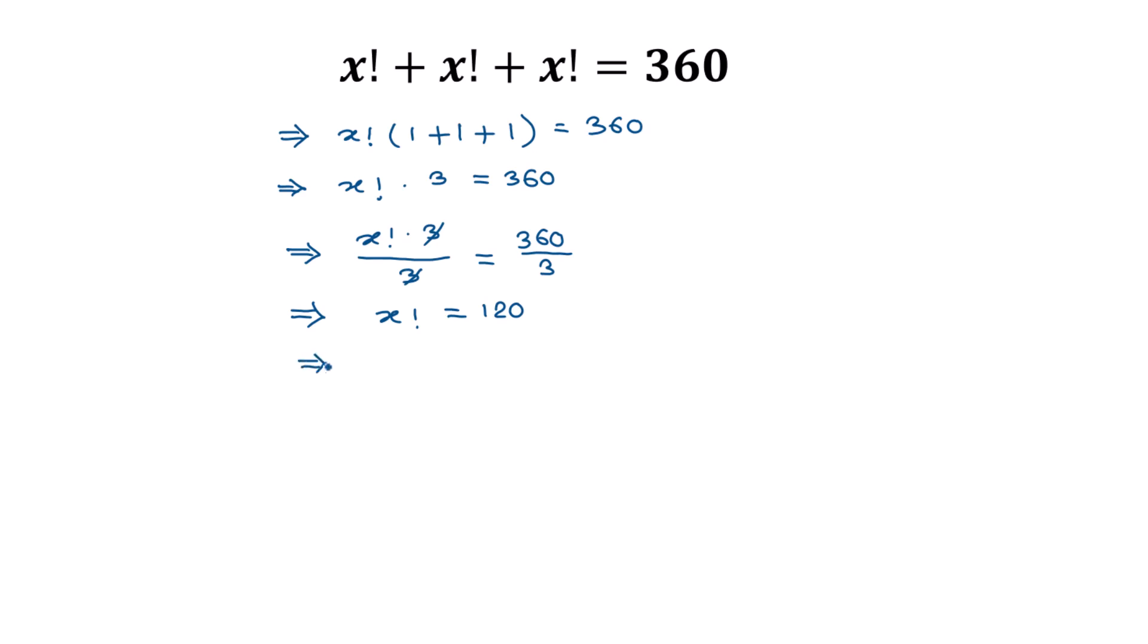Or x factorial is equal to 120. This can be written as 5 times 4 times 3 times 2 times 1, this is 120.